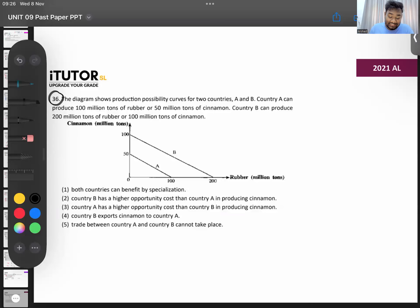Right, 2021 question 36. The diagram shows the production possibility curve of two countries, Country A and B. Country A can produce 100 tons or 50 tons. They've given you the information in a paragraph and also given the information in a PPC.